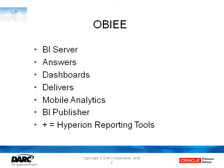OBIEE, which is Oracle Business Intelligence Enterprise Edition, is really comprised of a number of important components. The heart and soul of the tools is the BI server, which is really the traffic hub of the overall application. It basically defines where the data comes from, how it relates to itself, and is the intermediary — the pipeline to everything else.